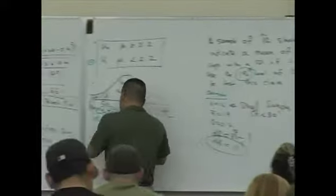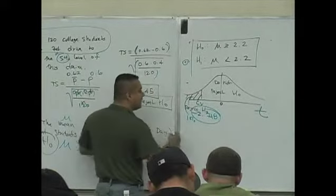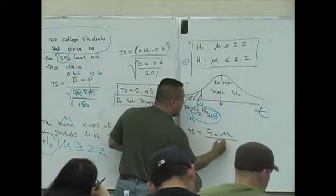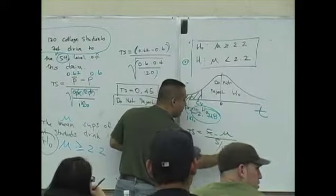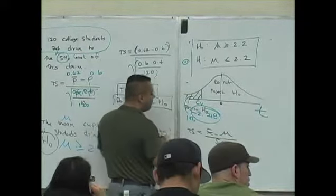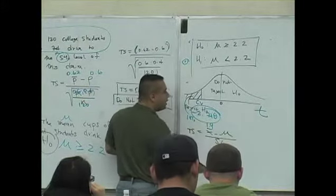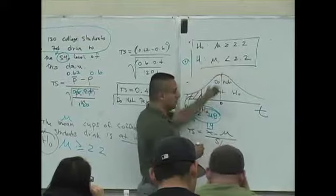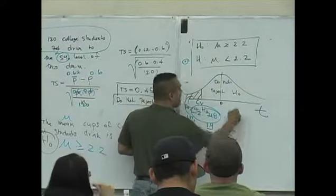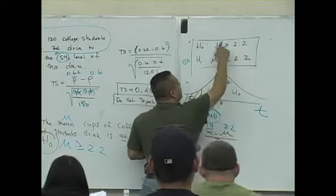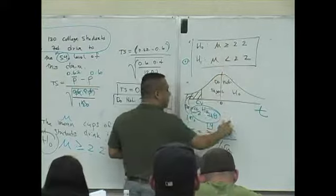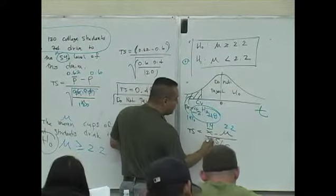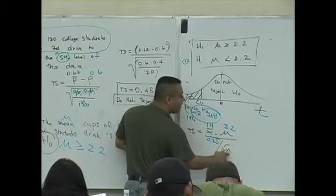So what's left now is to compute the test statistic: x-bar minus mu over s divided by the square root of n, where x-bar is going to be 1.9. Again, mu is 2.2. It's what you see in the hypothesis. Standard deviation is 0.7. The sample size is 12.